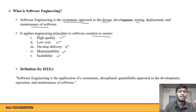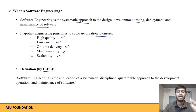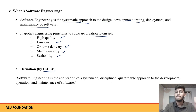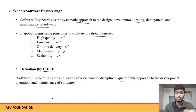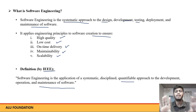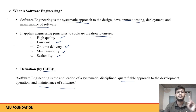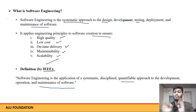The proper definition for software engineering is given by IEEE: software engineering is an application of a systematic, disciplined, quantifiable approach to the development, operation, and maintenance of software.